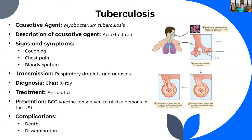Fortunately we live in the modern era where we can treat this for the most part. Signs and symptoms include coughing, chest pain, and bloody sputum. Transmission is through respiratory droplets and aerosols, which is why it spreads so readily — particularly in unprotected communities like large cities.